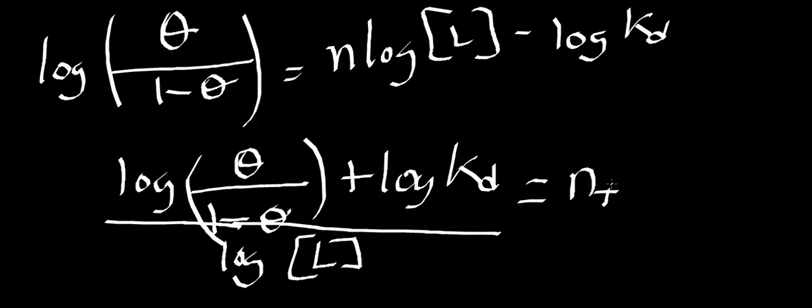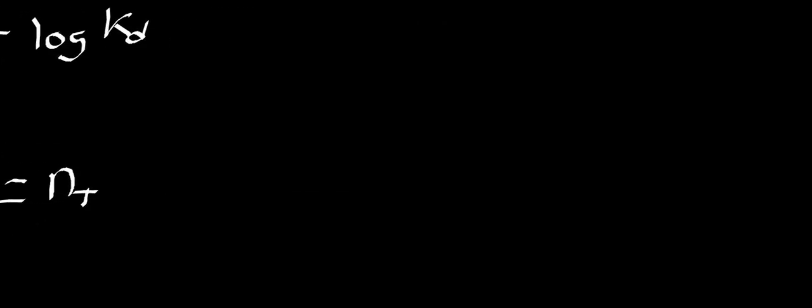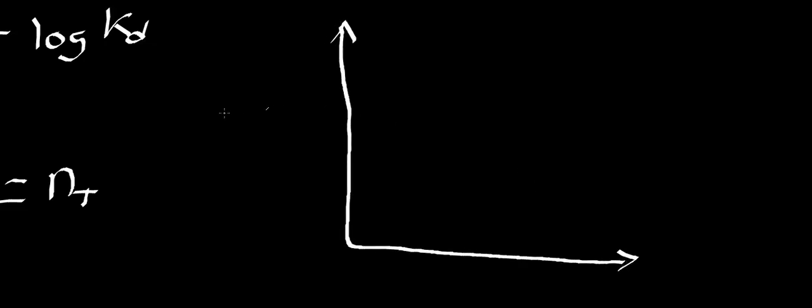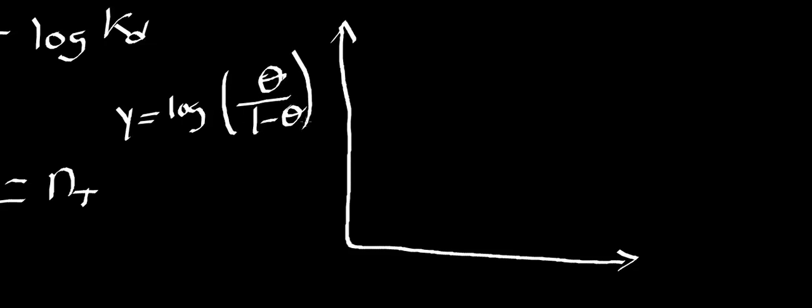The actual Hill coefficient from data is always less than the theoretical N. We can make a plot called a Hill plot. On the y-axis, y equals the log of theta divided by 1 minus theta. On the x-axis, x equals the log of the partial pressure of O2 — PO2.